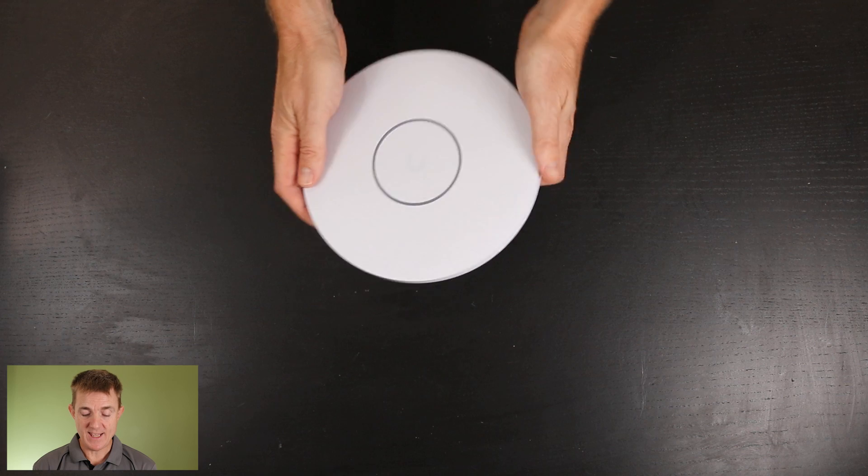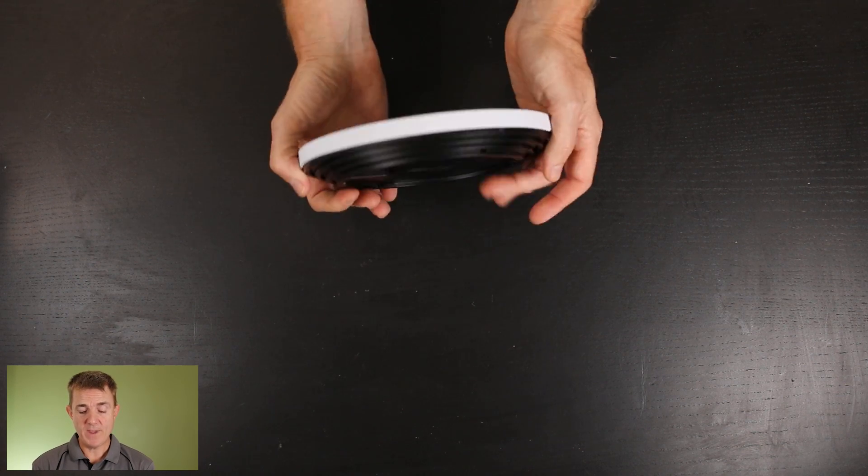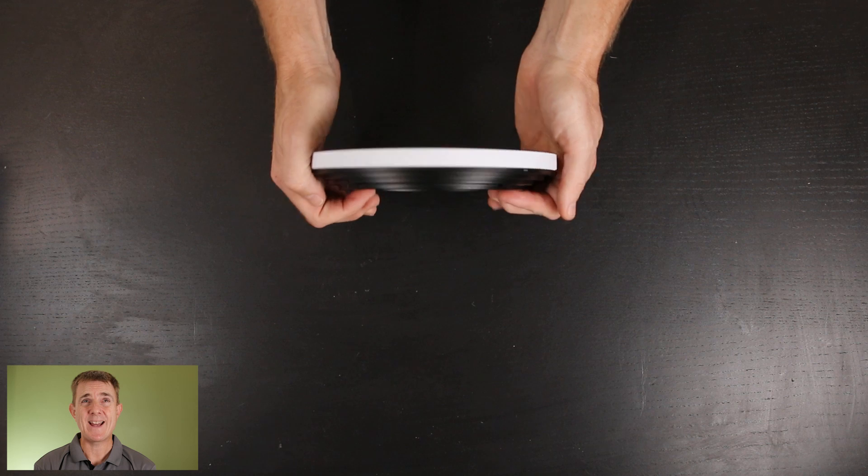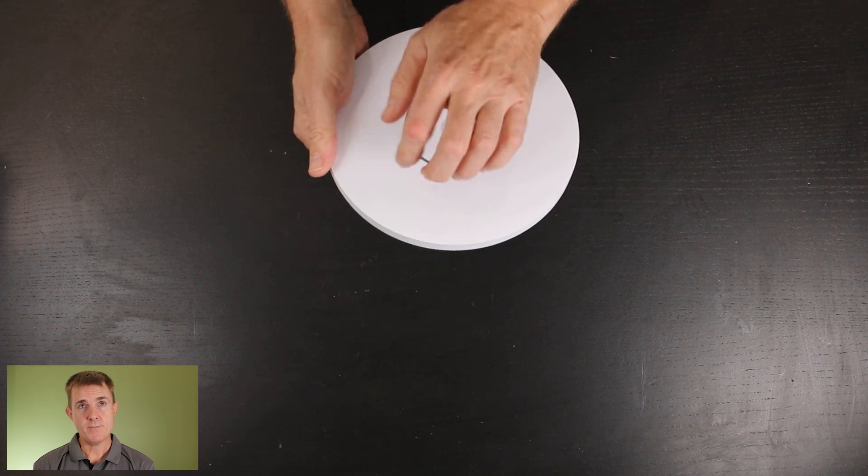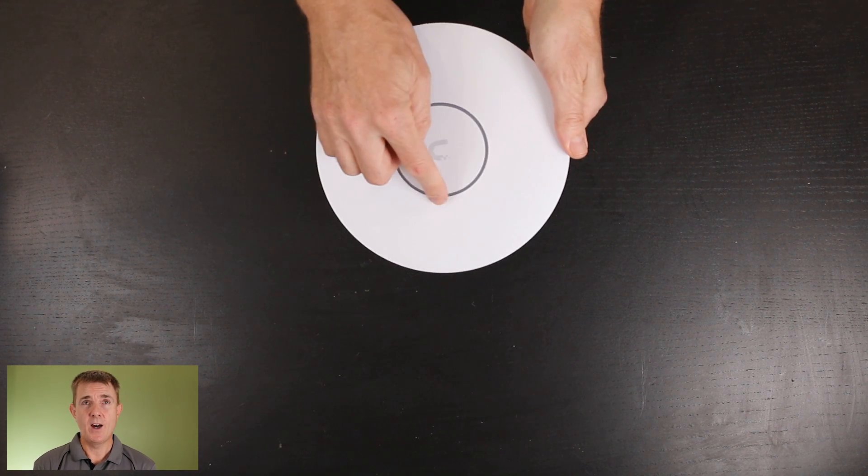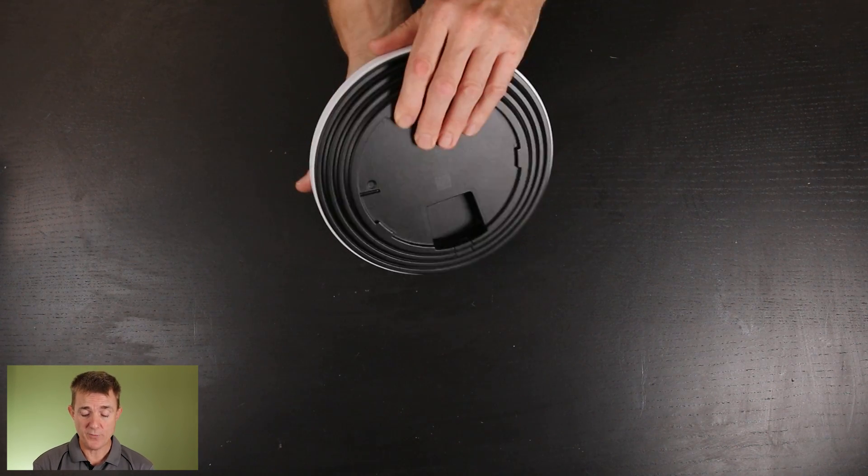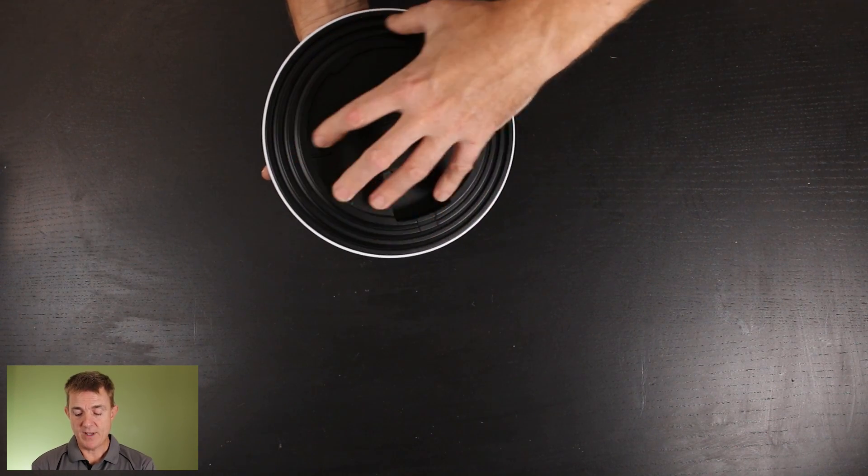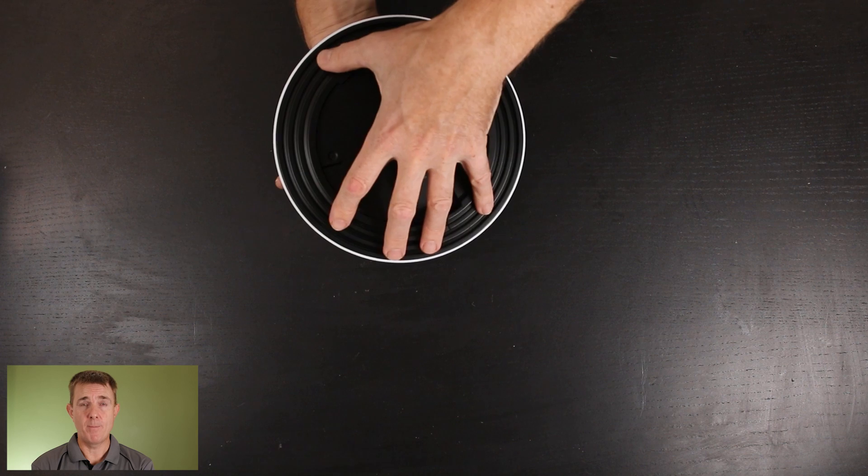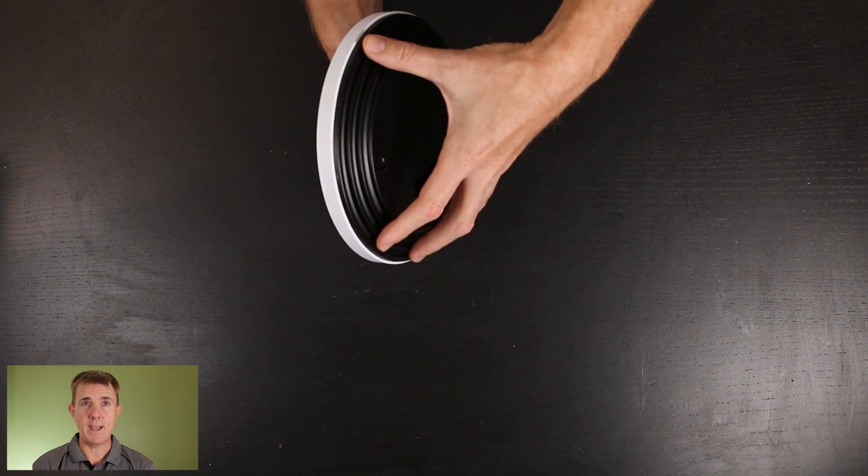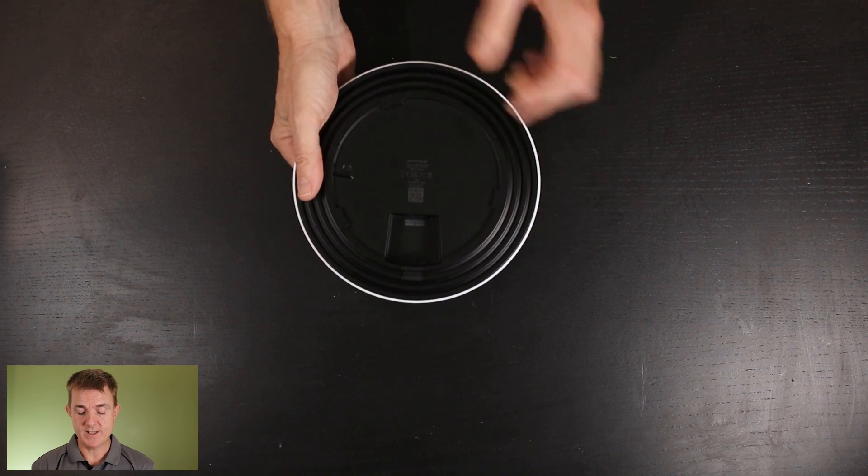Then we have the access point here itself, slightly different from the other Ubiquiti access points, which have more of a dome shape. This is completely flat. As you can see, polycarbonate on this side, our LED ring lights up. When we power that up, you can turn that off in the software. On the back, we have an alloy, I presume of some type, big chunky heat sink you can see on there to just try and dissipate the heat of these powerful units.